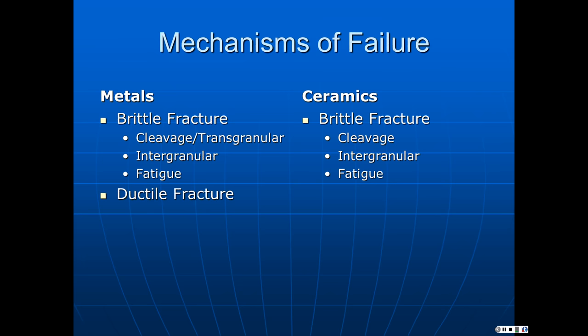There are some general categories of failure mechanisms. In metals, we have brittle fracture with three subdivisions — not including variations assisted by the environment. We're going to talk about cleavage or transgranular fracture, intergranular fracture, and fatigue. Know that in different environments, cleavage may become easier, intergranular fracture may be enhanced, and fatigue fracture may change its basic process. Metals can also undergo ductile fracture, which involves at least locally some fairly large amounts of yielding and lots of plastic deformation.